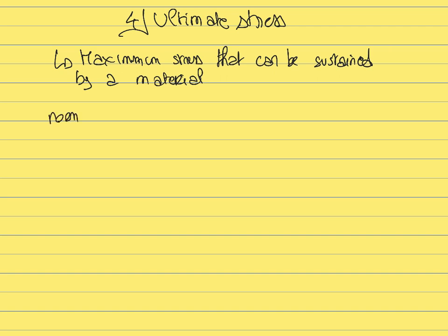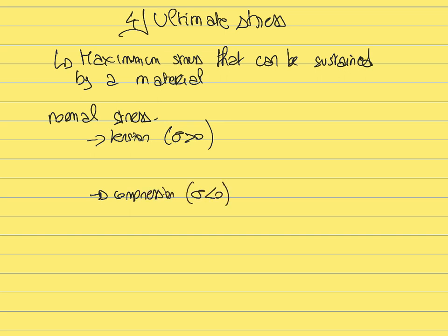When it comes to normal stress, a material can break either due to normal stress or shear stress. For normal stress, there are two types with different physical meanings: tension and compression. It is different to put a material under tension — to elongate it — versus under compression — to compress and shrink it. In most cases, it is much easier to break materials under tension than under compression.